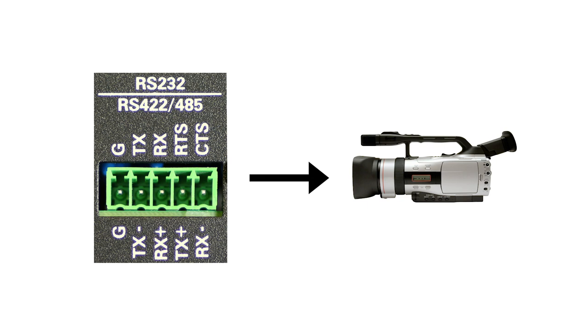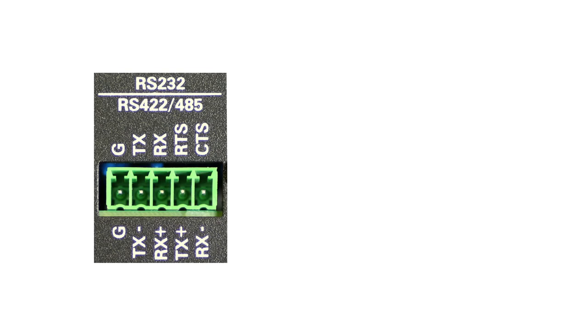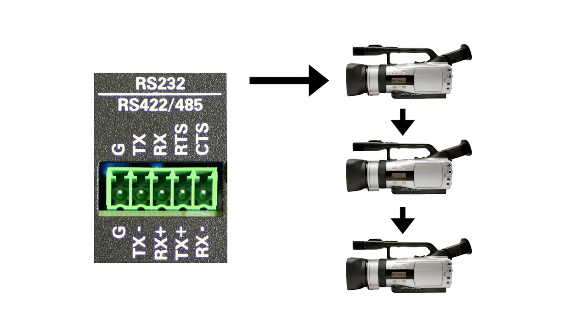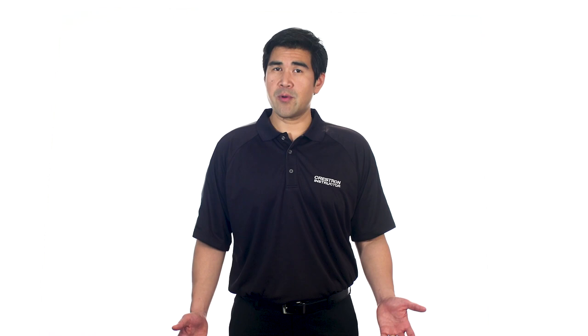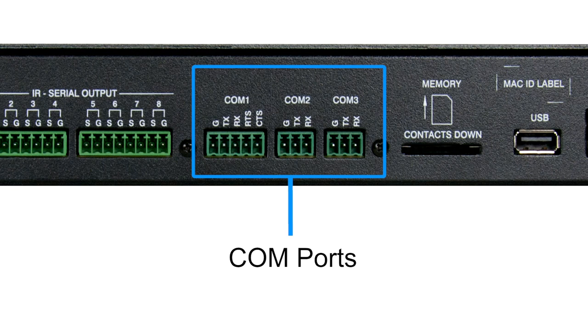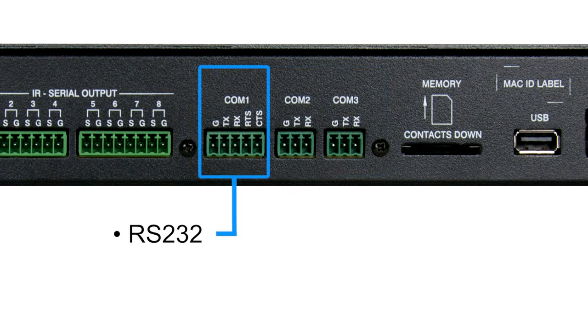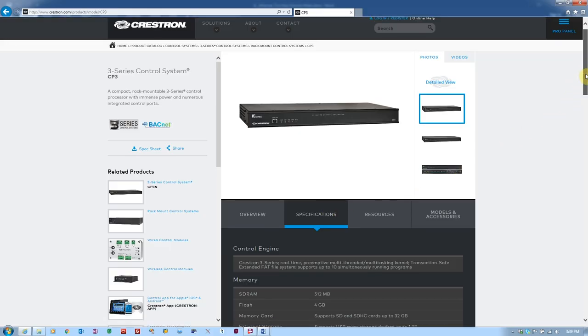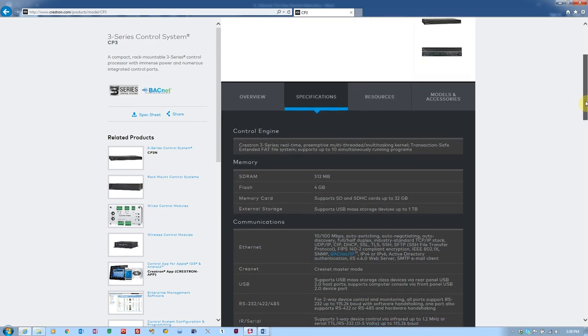RS-422 is less common but still in use because it is a balanced communication that offers greater distance over RS-232. RS-485, like RS-422, is also a balanced communication, meaning it is less susceptible to external influences such as electrical interference or RF noise. An advantage of RS-485 is that it can do multipoint communication, meaning many devices can be placed on the same network. Not all ports support RS-422 or RS-485. On the CP3, there are three COM ports: the first supports RS-232, RS-422, and RS-485, while the other two are RS-232 only.